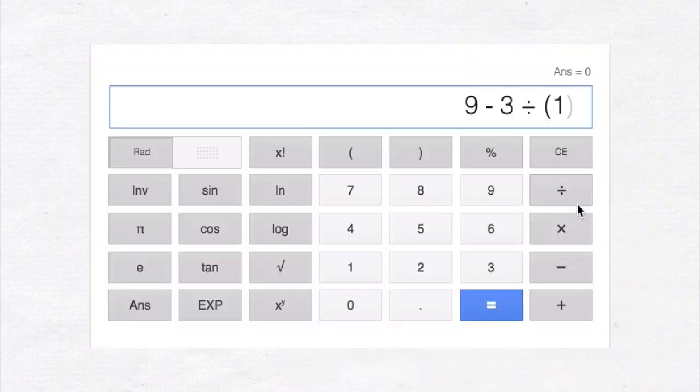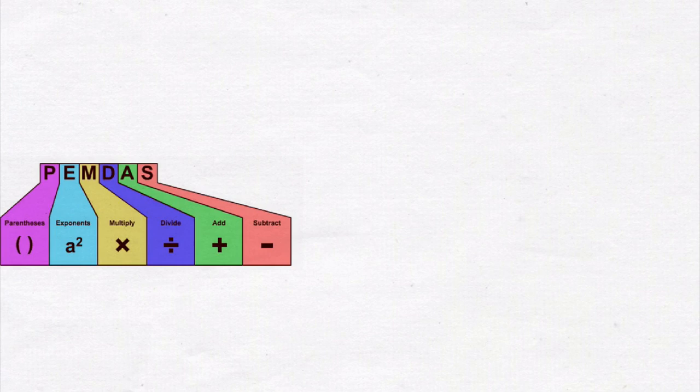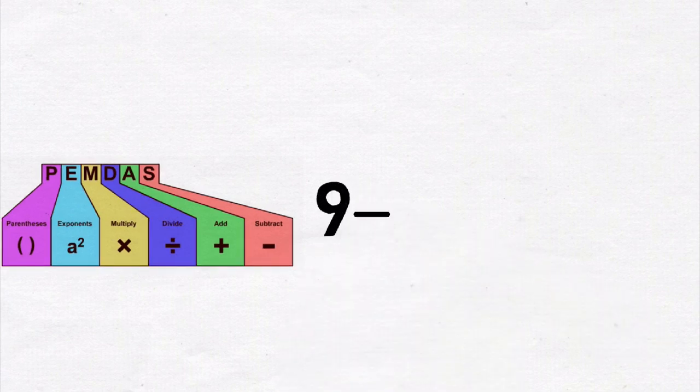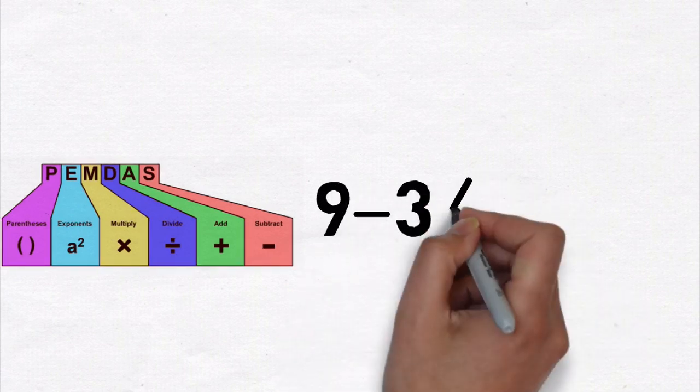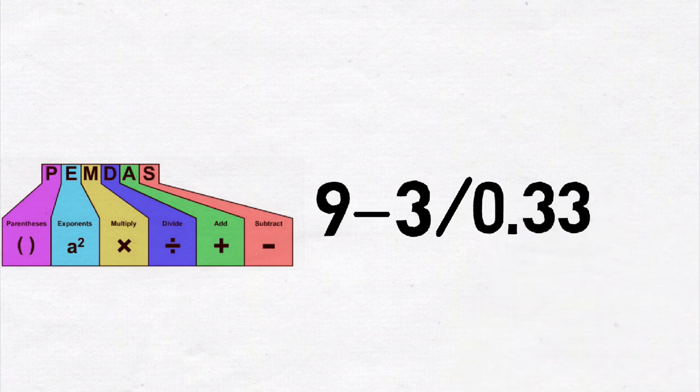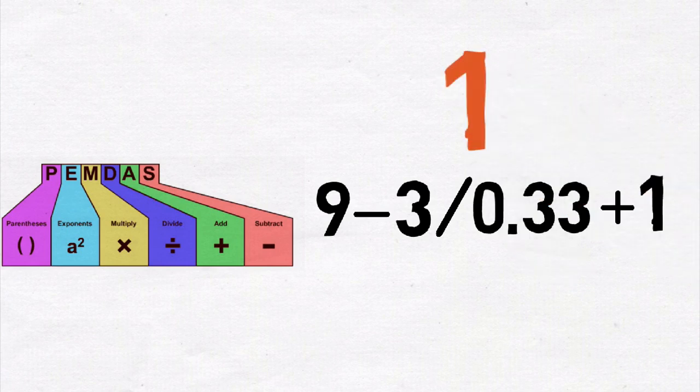Let us now tell the calculator to group the one-third together and see what happens. As you just saw, the calculator evaluated the one-third first as per PEMDAS rules. So we got 9 minus 3 divided by 0.33 plus 1, and this results in one, which is the correct answer.